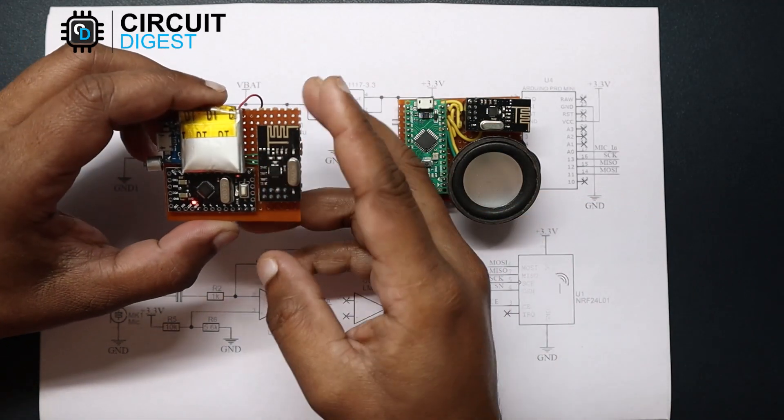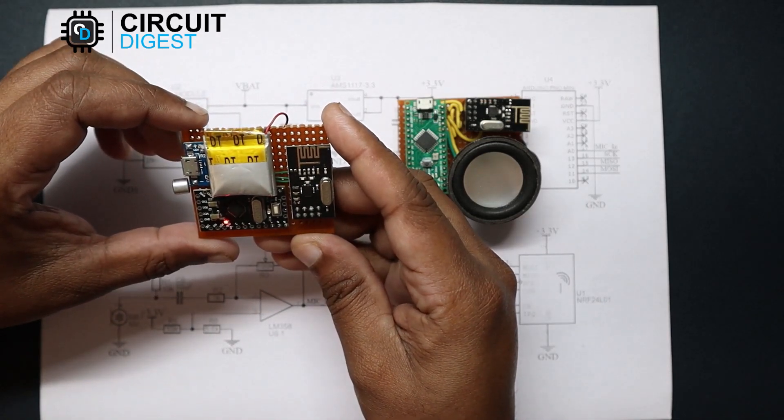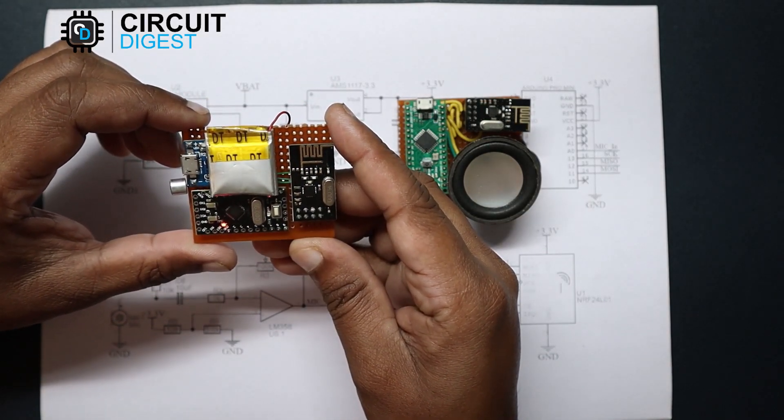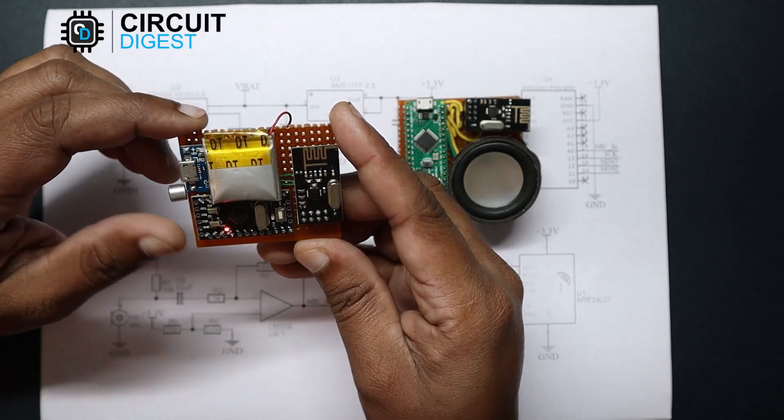Here we have the transmitter circuit which is compact and has a built-in battery charging and protection circuit along with the microphone pre-amplifier.